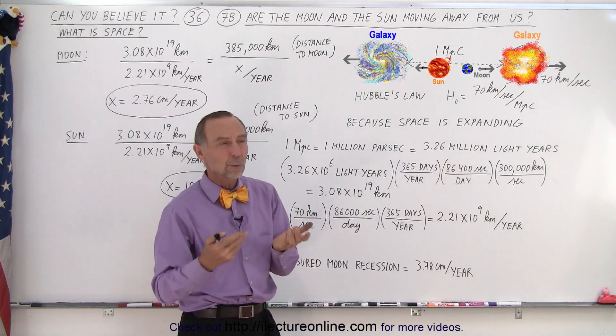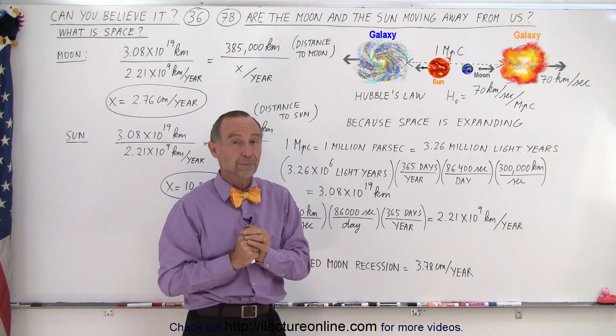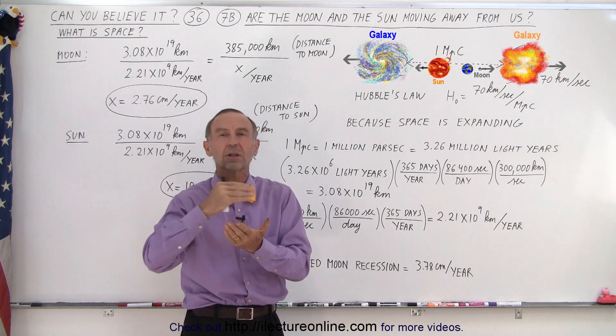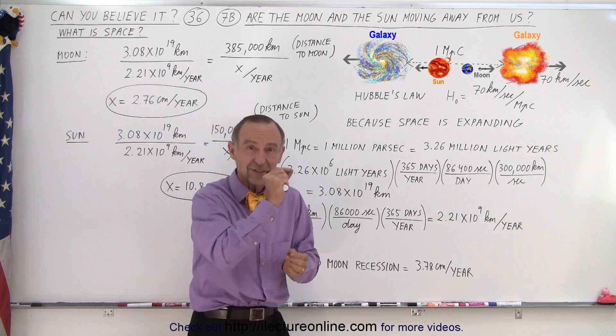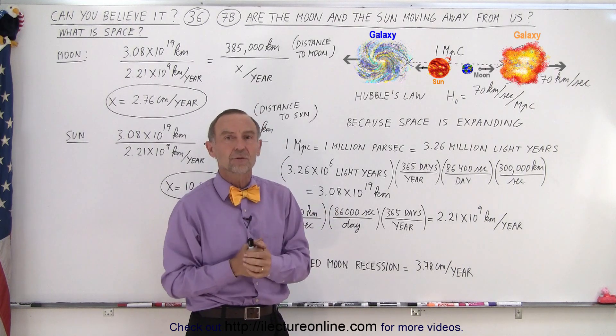Now what's a light year? Well, a light year is the distance that light travels in a single year. Now light travels quite quickly at 300,000 kilometers per second. That's 186,000 miles every single second. That's the distance from here to the moon in less than two seconds.